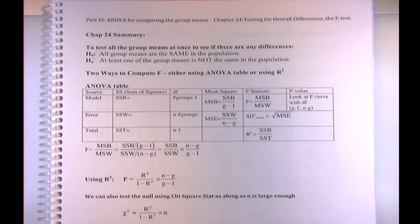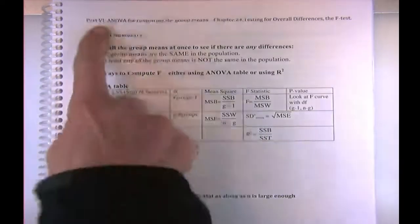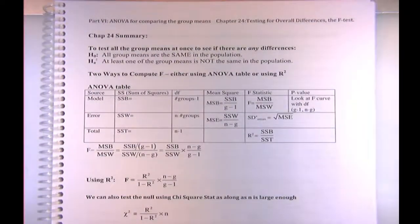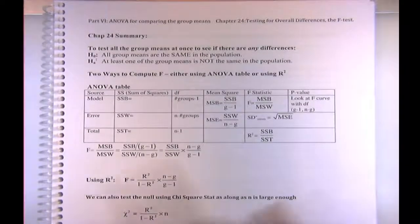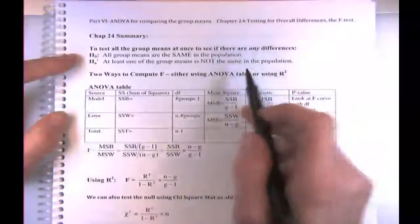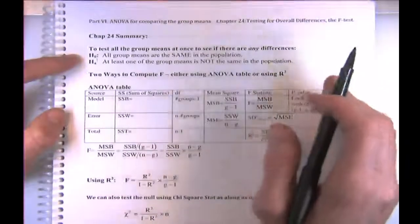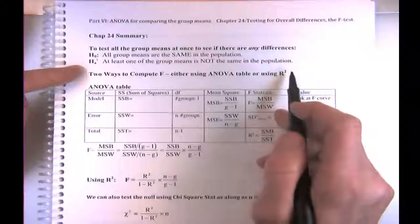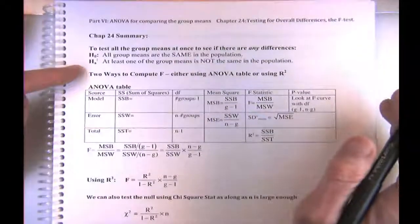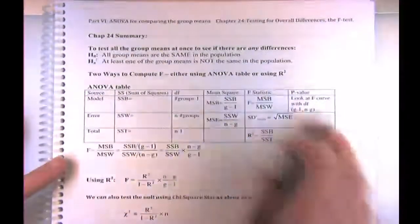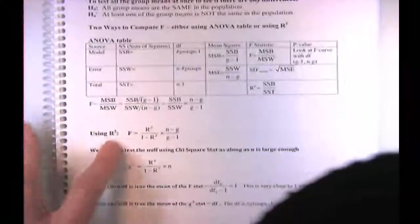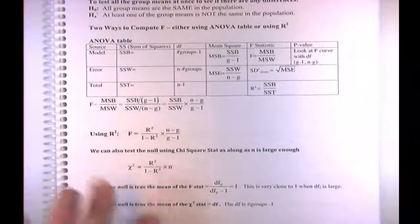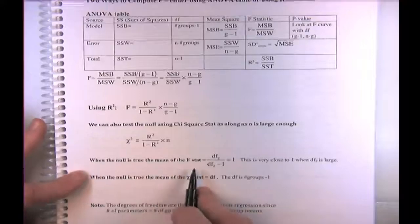Let's focus on finishing up Part 6: Analysis of Variance for comparing group means. We're on page 97, the Chapter 24 summary. We looked at how to test for the overall effect — the null hypothesis being that all the group means are the same. The alternative was that at least one group mean is different. We could fill out the ANOVA chart, or if you knew R-squared you could compute the F-statistic and the chi-squared.